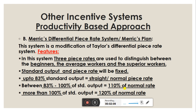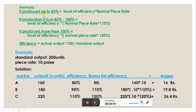If a worker's efficiency is between 83% and 100% of standard output, the worker receives 110% of the normal piece rate as a bonus. If the worker's efficiency is more than 100% of standard output, the worker receives 120% of the normal piece rate.